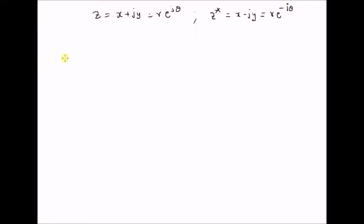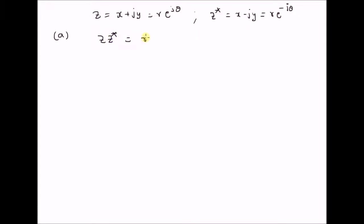Given this information, let us prove some properties of complex numbers. The first one is that the product of the complex number z with its conjugate z star should be equal to the square of the amplitude, that is r squared.